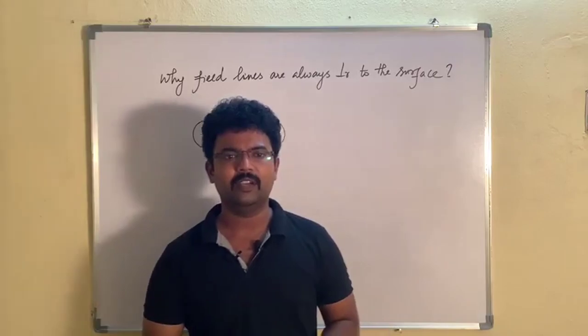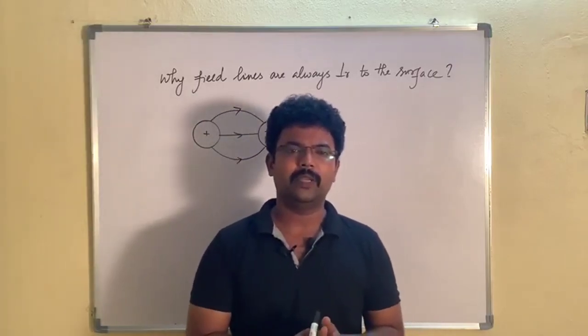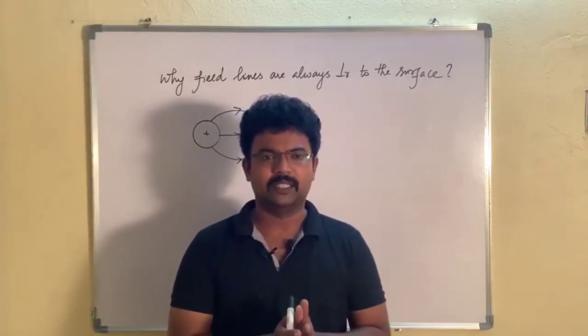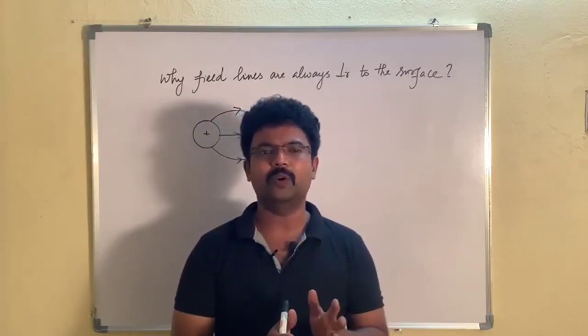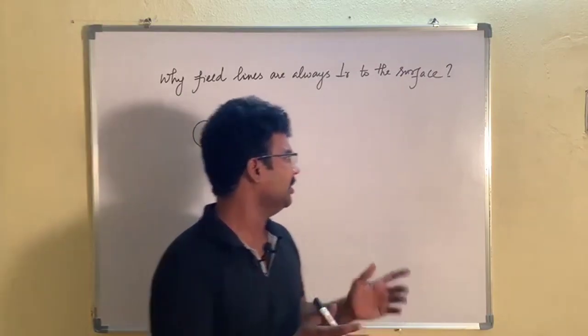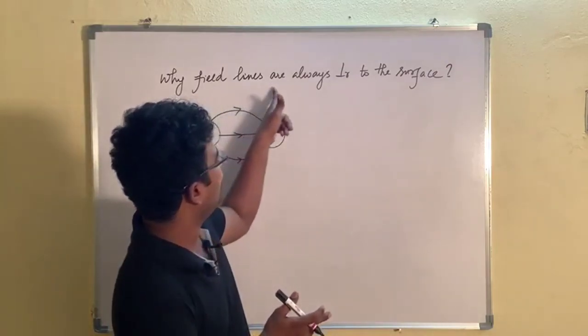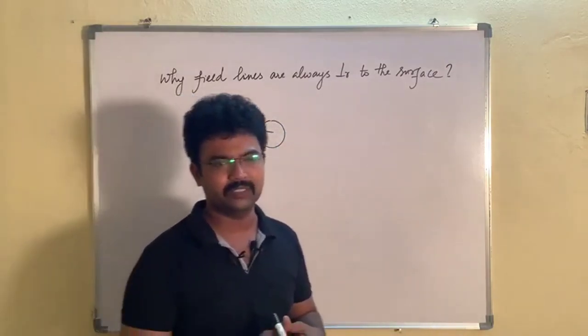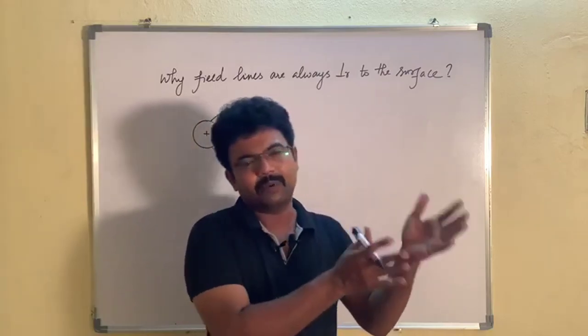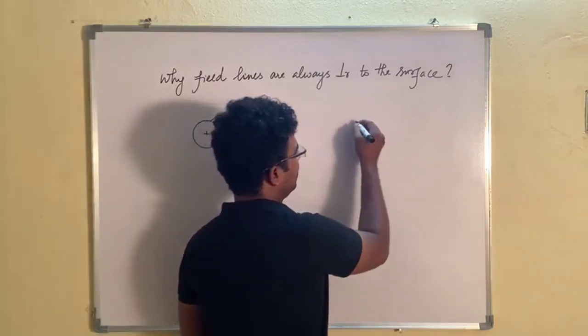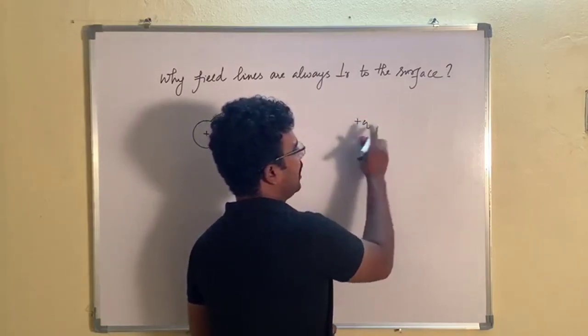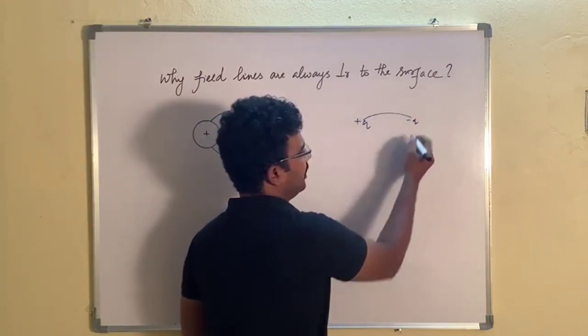Hello all, we are going to discuss the topic of field lines properties. Out of five properties, an important property is that field lines are always perpendicular to the surface. Field lines always start from positive and end with negative.